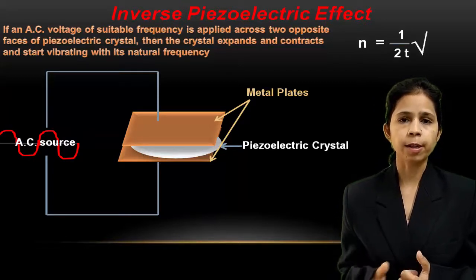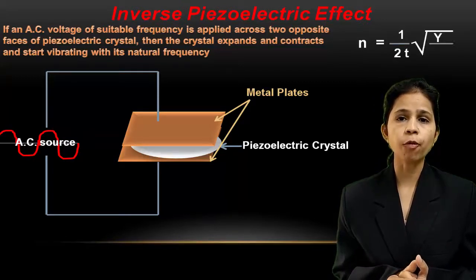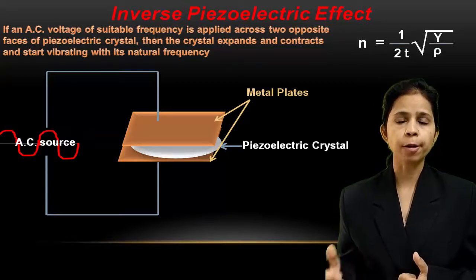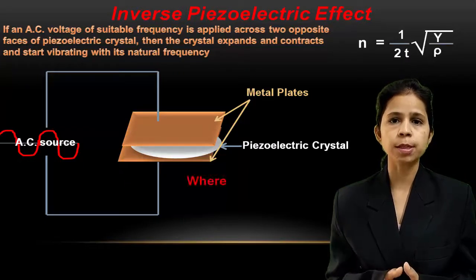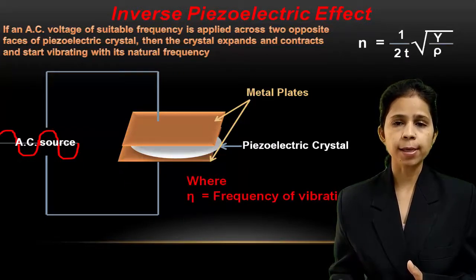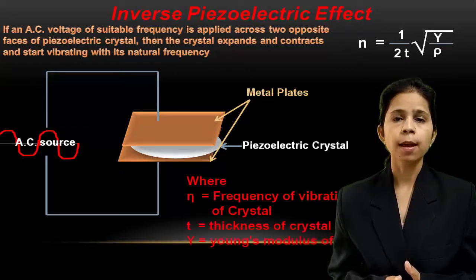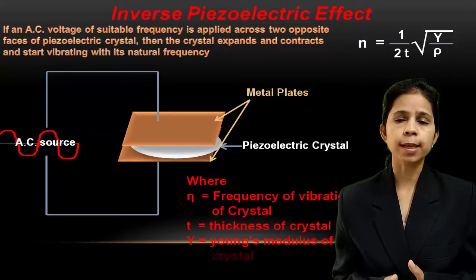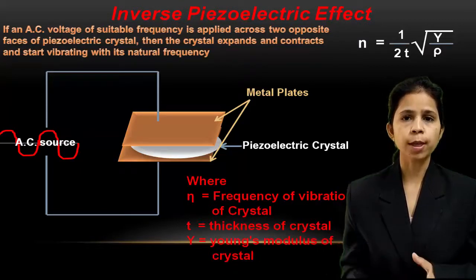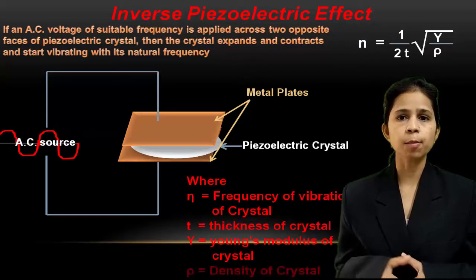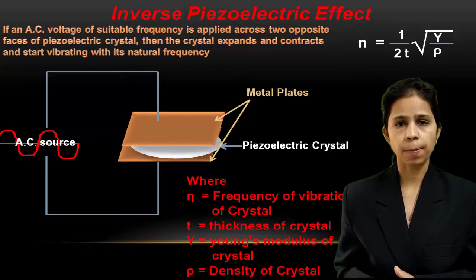The natural frequency of vibration is given by n = (1/2t) × √(Y/ρ), where t is the thickness of the crystal, Y is the Young's modulus of the crystal, and ρ is the density of the quartz crystal. So, thinner the crystal, the more will be the frequency of vibration.